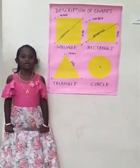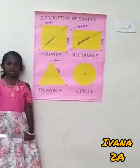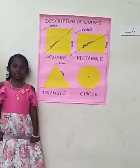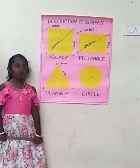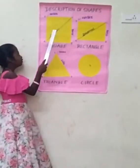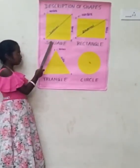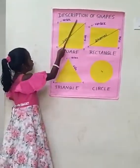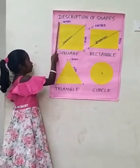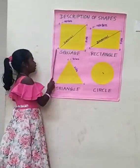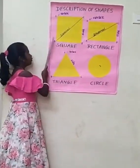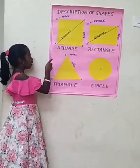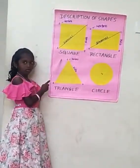Good morning. I am A. Vanas. I am going to tell about shapes. This is a square. A square has four sides and four corners. It has two diagonals and four sides. All sides are equal.